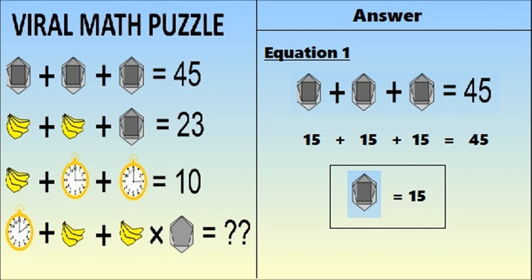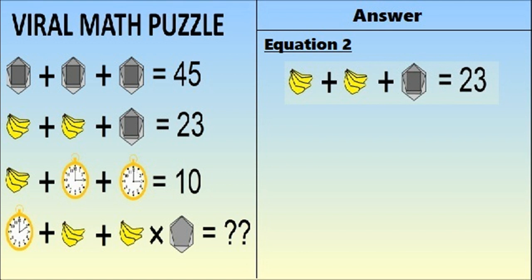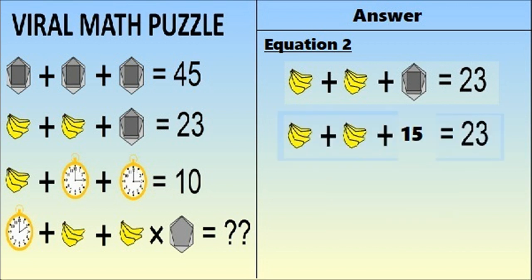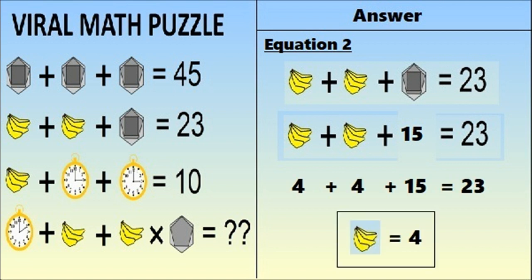Moving on to equation number 2: bananas plus bananas plus a shape equals 23. From equation 1, the shape equals 15, so bananas plus bananas plus 15 equals 23. There are 4 bananas in each bunch, so 4 plus 4 plus 15 equals 23. Therefore 4 bananas equals 4.